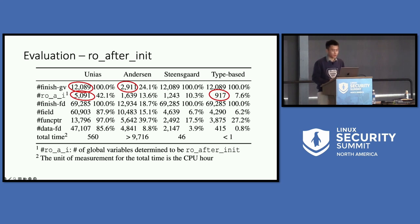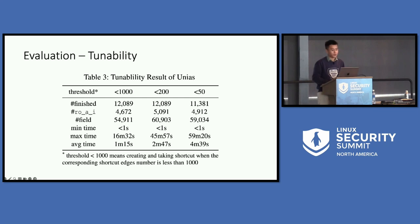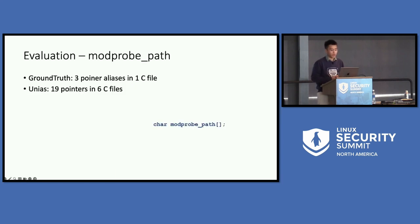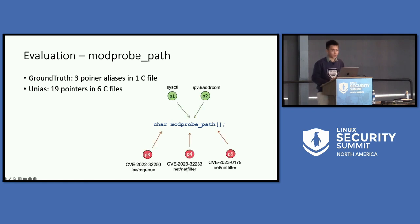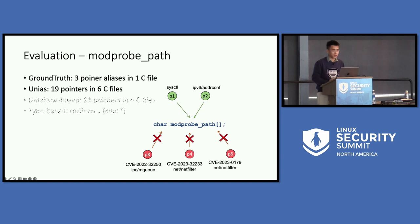The design itself is still sound, though we need to handle some implementation-level details. We also tested the tunability of UniS: by setting a more aggressive shortcut strategy, we do improve scalability but also sacrifice precision a little bit. Going back to the highly exploited global variable modprobe_path — the ground truth is that it has three pointer aliases in one C file. UniS finds 19 pointers in six C files, which slightly over-approximates the truth. But no matter what, it's good enough for preventing all related exploits. As a comparison, dataflow-based methods find 11 pointers in four C files, while type-based methods find millions of pointers, because modprobe_path is a character array global variable, which is essentially a void star pointer in LLVM IR.